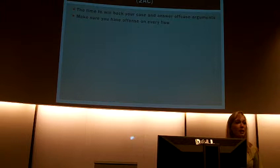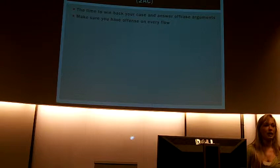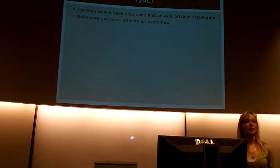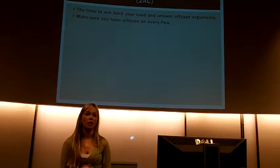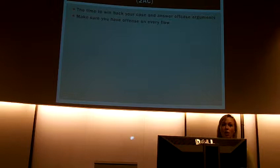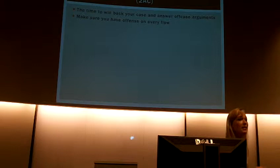The 2AC is also an essential time to not only deploy defensive arguments against 1NC dissads, but you also want to make sure that you have a counter-attack strategy. When the negative in the 1NC says your affirmative spends a lot of money, spending causes the economy to collapse, and economic collapse causes global nuclear war — that is the form of a dissad, with uniqueness, link, internal link, and impact. The affirmative can respond offensively and say, actually, we save money — we prevent the dissad and turn it into an advantage.